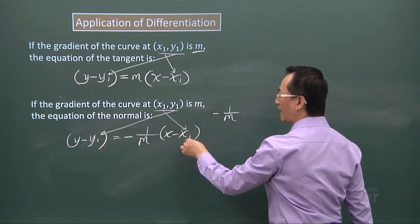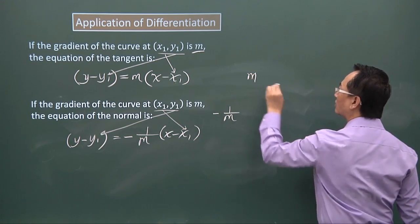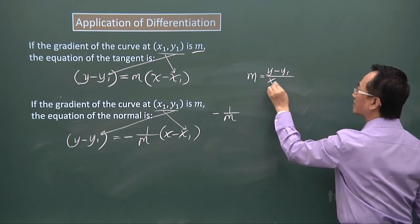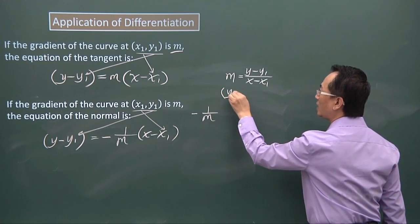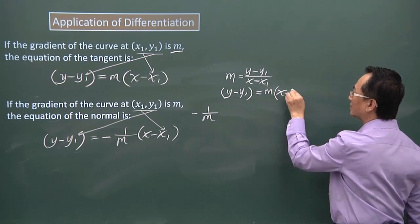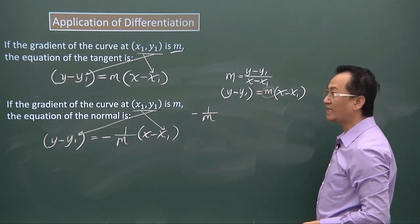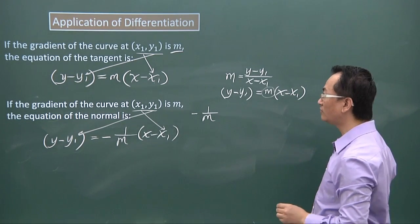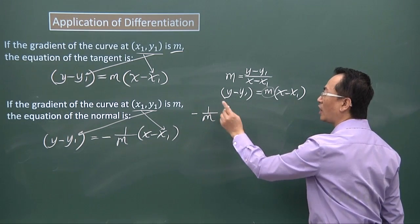It may seem strange how we form the equations of the tangent and normal from this, but if you recall, gradient equals (y minus y1) over (x minus x1). A rearrangement gives y minus y1 equals m times (x minus x1). So basically, with this arrangement, you just have to take care of what the gradient is: for the tangent, the gradient is the same as the gradient of the curve; for the normal, you take negative the reciprocal of the gradient of the curve.